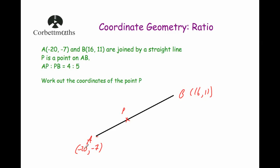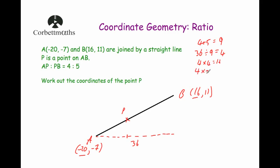Considering horizontally first: the x-coordinates are −20 and 16, so the difference is 36. AP to PB is in the ratio 4 to 5, so we divide 36 in that ratio. 4 plus 5 is 9, and 36 divided by 9 is 4. Then 4 times 4 is 16, and 4 times 5 is 20. So from A to P we go 16 horizontally, and another 20 gets us to B. So −20 plus 16 is −4, giving the x-coordinate of P as −4. Checking: −4 plus 20 is 16. Correct.